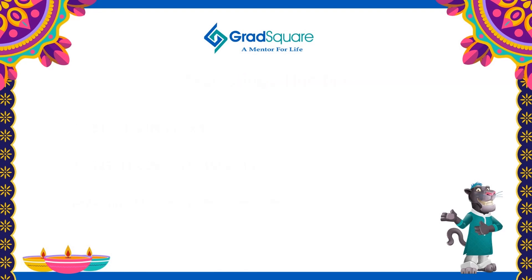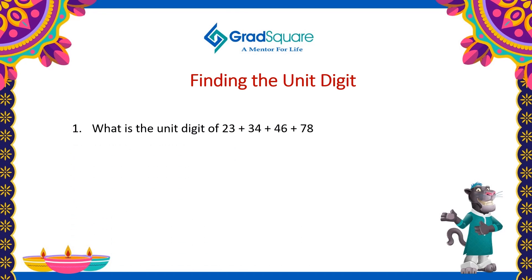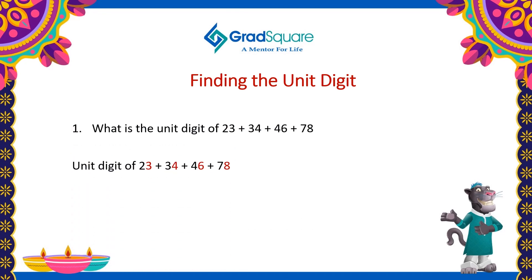How to find the unit digit of the given expression? The unit digit of the given expression can be found by considering the unit digit of all the participating numbers. Here the unit digits of all the participating numbers are 3, 4, 6 and 8. Adding, we are getting 21. So the resultant will have 1 as the unit digit.